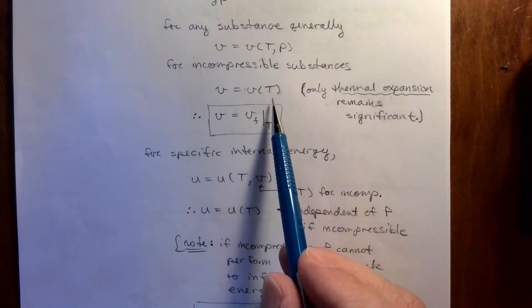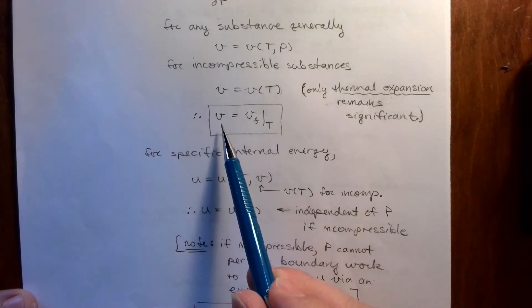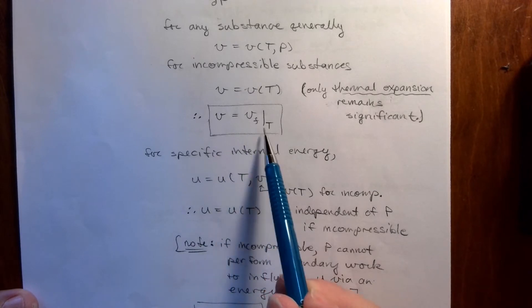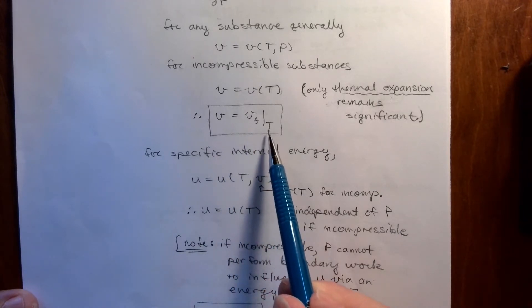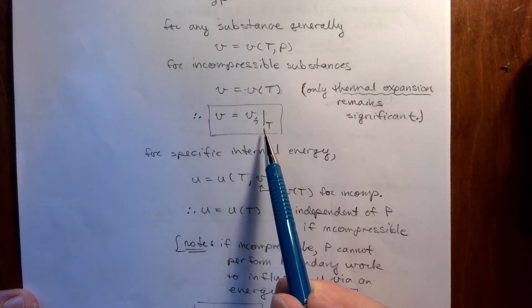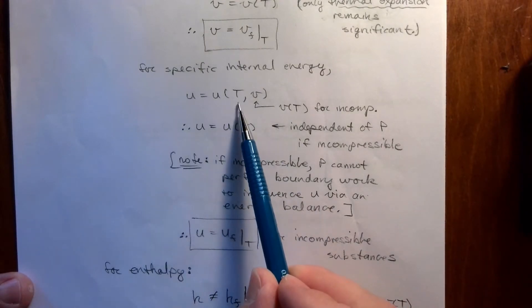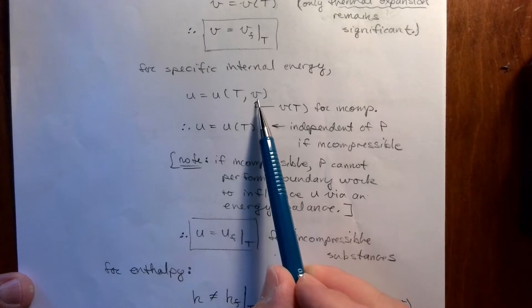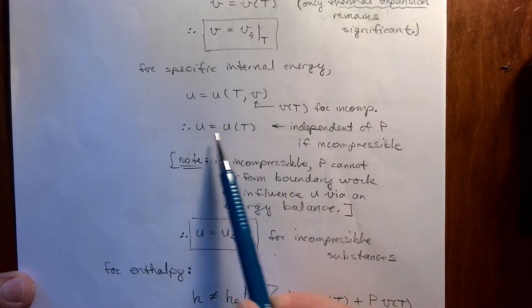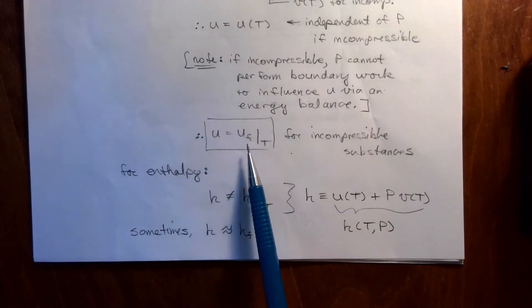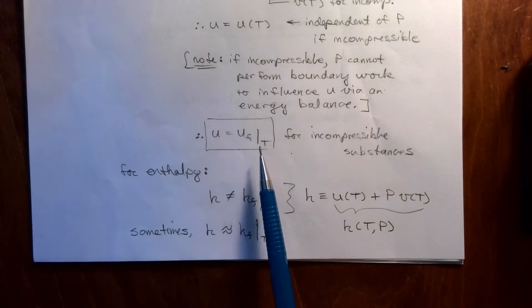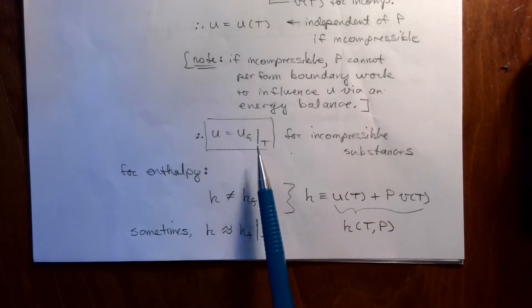But if specific volume doesn't depend on pressure, then it only depends on temperature for an incompressible substance. So our logic says V for a compressed liquid must be the saturated liquid value at the same temperature, because as pressure increases the specific volume would not be changing — find VF at the same temperature. For internal energy, U as a function of T and V, but since V only depends on temperature, U is left to be only a function of temperature. So U equals UF at the temperature, and we can read this right off the table without needing compressed liquid tables.